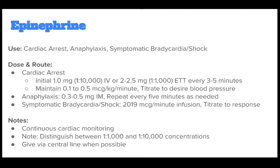Epinephrine is used for cardiac arrest, anaphylaxis, symptomatic bradycardia, and shock. For cardiac arrest, the initial dose is 1 mg at 1:10,000 IV or 2-2.5 mg at 1:1,000 ETT every 3-5 minutes; maintain 0.1-0.5 mcg per kg per minute, titrated to desired blood pressure. For anaphylaxis, 0.3-0.5 mg IM, repeat every 5 minutes as needed. For symptomatic bradycardia or shock, 2-10 mcg per minute infusion, titrate to response. Continuous cardiac monitoring; distinguish between the 1:1,000 and 1:10,000 concentrations, and give via central line when possible.